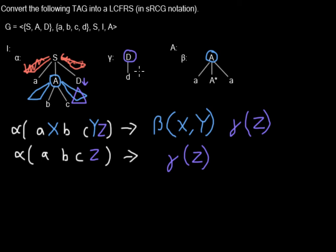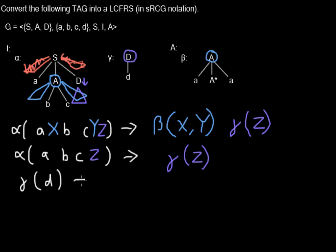So now we are done for the alpha tree. Now let's look at the gamma tree, where we don't have really much to think about. This tree will just produce the terminal D string. Here we cannot adjoin and there are also no substitution nodes, so the production rule doesn't depend on any other trees. That means on the right-hand side we don't have any predicates — we just write Epsilon. So we are done with the second tree.